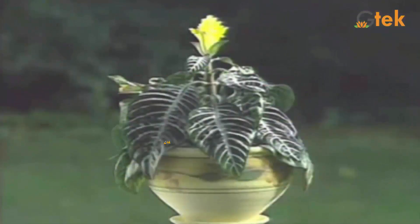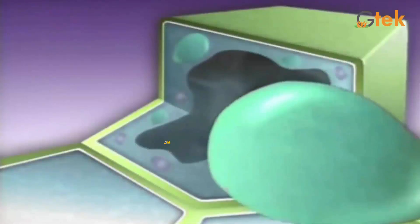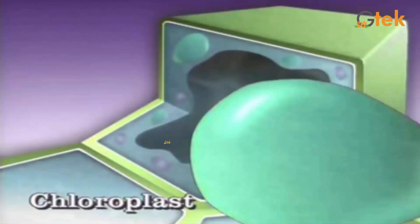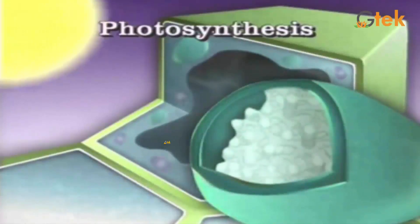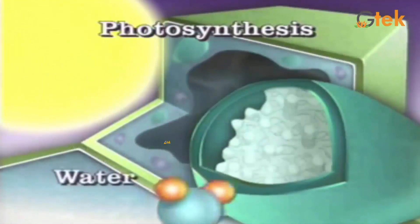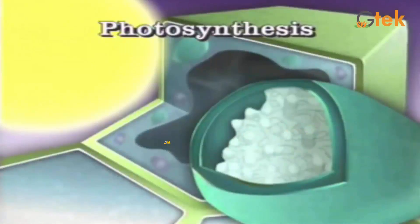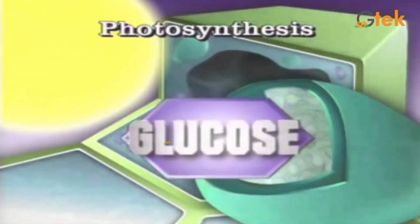Each and every plant has a cell, and each and every cell has structures. In the cell structure, this portion is called the chloroplast. It consists of chlorophyll, which is involved in the photosynthesis process — it absorbs sunlight and carbon dioxide and water. These three parts react with each other and finally produce glucose, that is sugar.